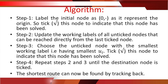Step 2: Update the working labels of all the unticked nodes that can be reached directly from the last ticked node. Step 3: Choose the unticked node with the smallest working label — that is, the smallest Ui. Tick this node to indicate that this node has been solved.